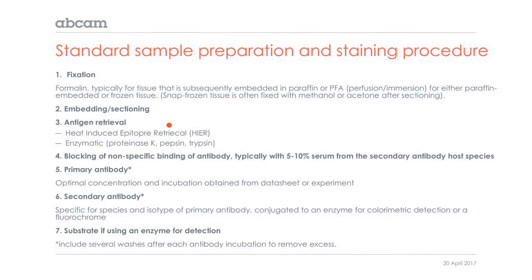Then you're moving on to the antigen retrieval step. At least for samples that are fixed in formaldehyde-based fixatives, this reverses some of the cross-linking introduced by fixation, helping to reveal the epitope that the antibodies want to recognize. That can be done with either heat-induced retrieval or enzymatic retrieval.